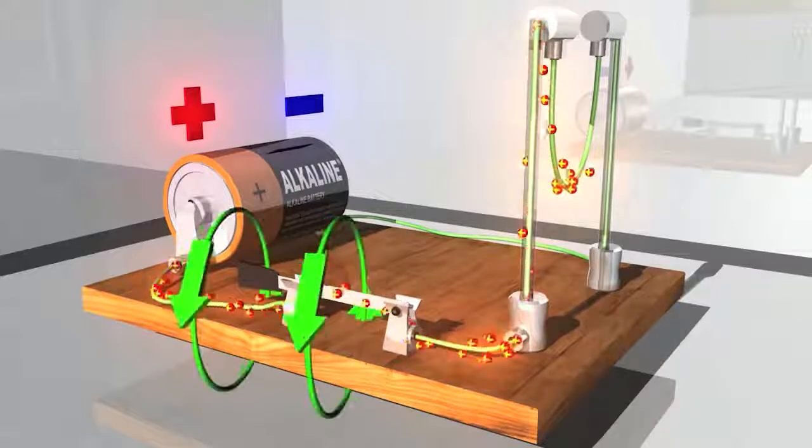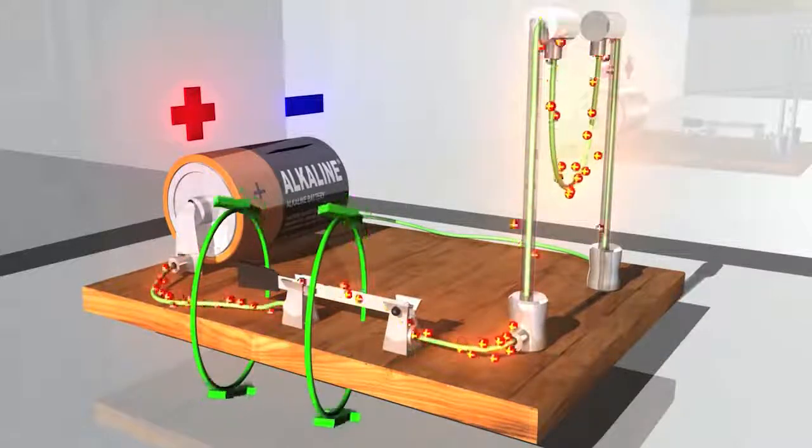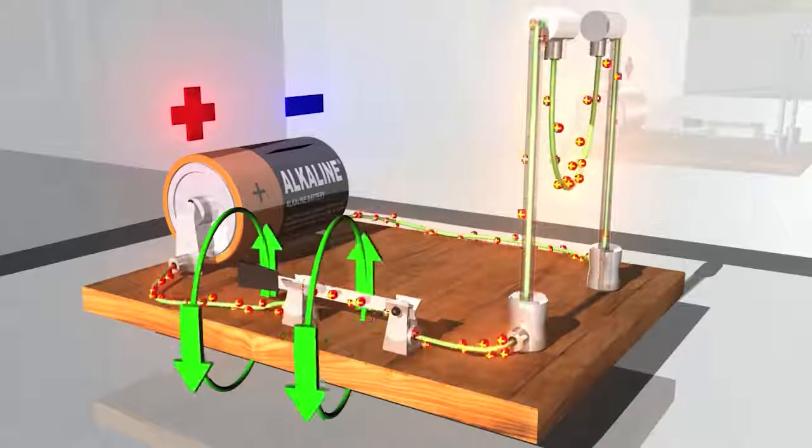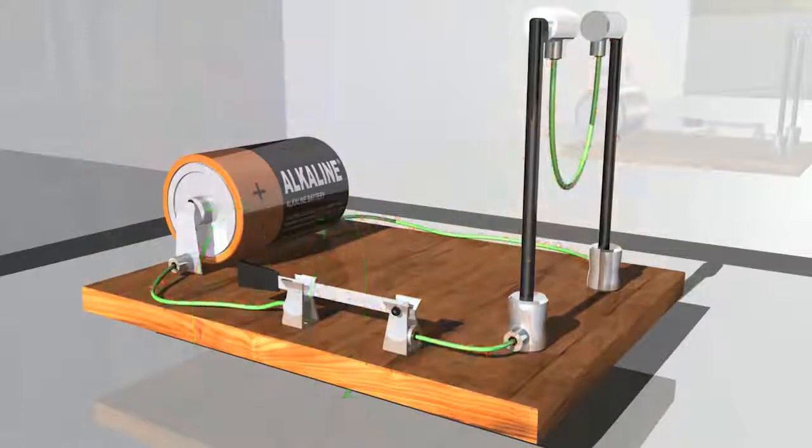The magnetic field produced by the current will interact with another magnetic field, just the way two magnets repel or attract each other. Here's a horseshoe magnet with a north and south pole.